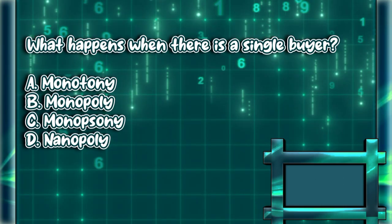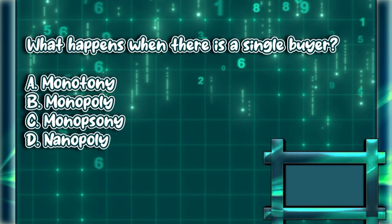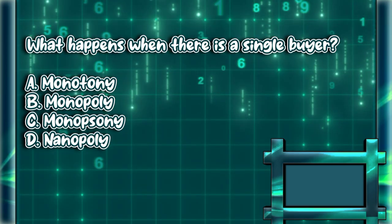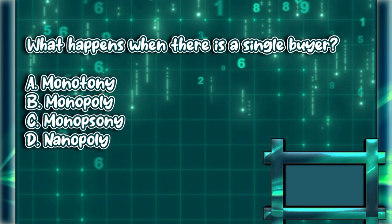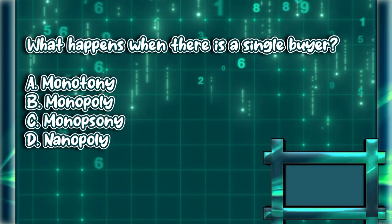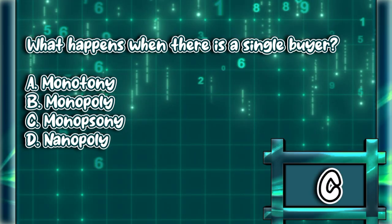What happens when there is a single buyer? A. Monotony. B. Monopoly. C. Monopsony. D. Nanopoly. The answer is letter C.